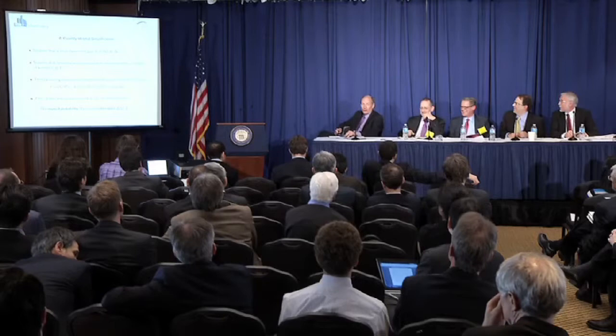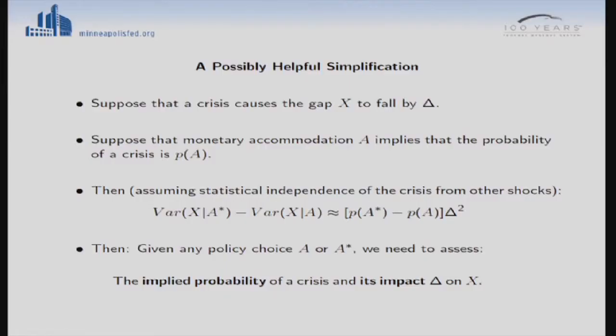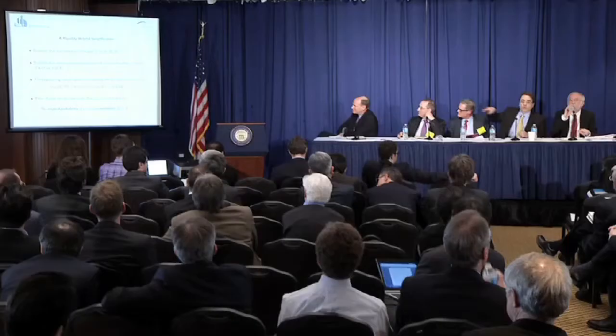Given any policy choice A over A-star, we need to assess the implied probability of a crisis and its impact delta on X. The first piece is really going through the kind of work that Steve was describing. Then there's further work to be done about how that crisis ends up depending on delta.